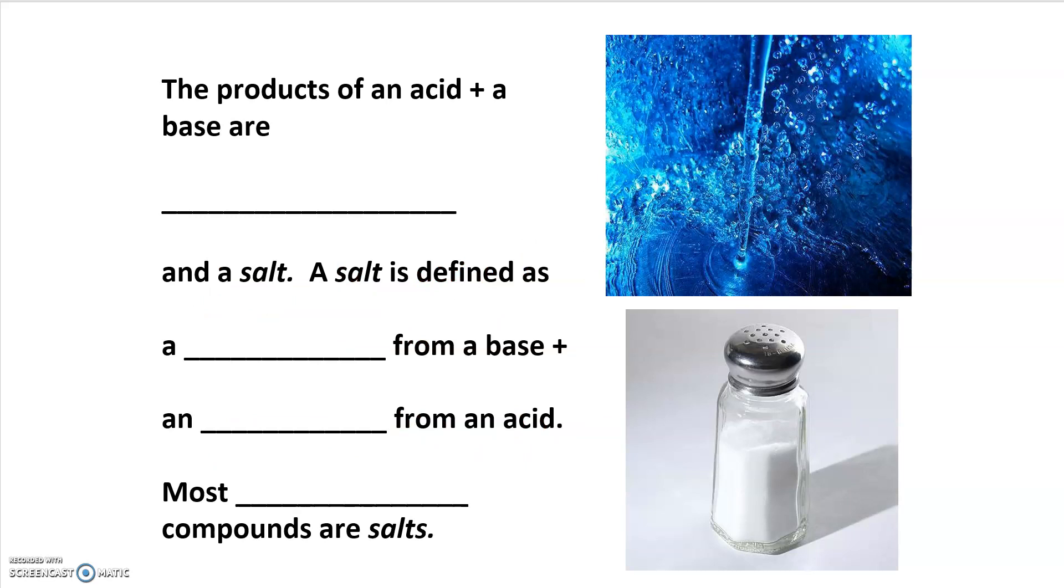The products of an acid-base reaction one more time are water and a salt. A salt is defined as the cation from a base and the anion from an acid. Just about every ionic compound could be classified as a salt. We just saw that sodium chloride could be produced from hydrochloric acid and sodium hydroxide.